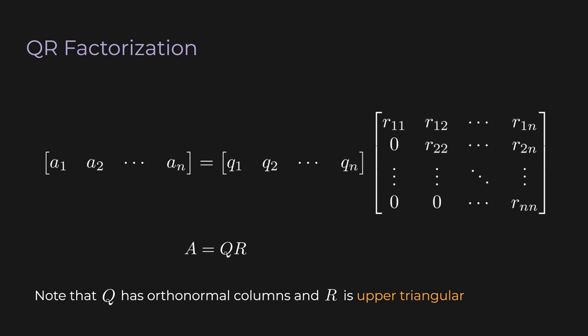By the way, you can see the matrix R has a very clear structure. All the entries below the main diagonal are zero, and all the entries along or above the main diagonal are possibly non-zero. A matrix with this structure is called an upper triangular matrix.